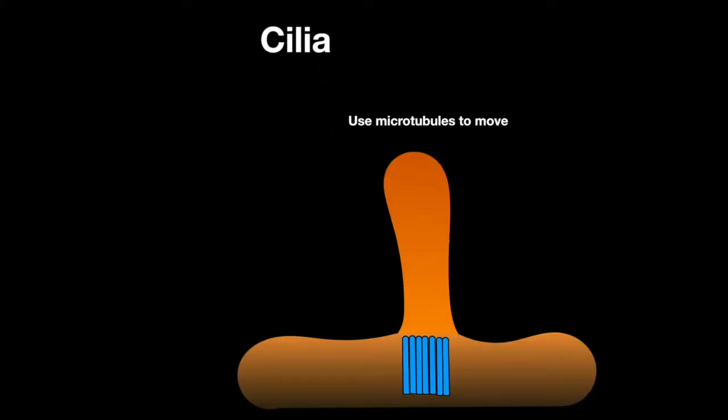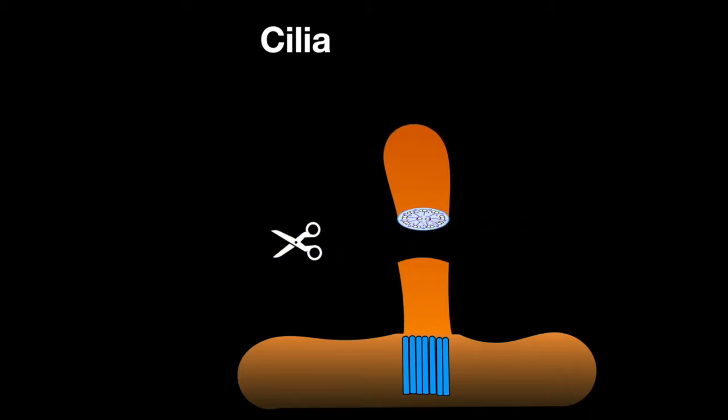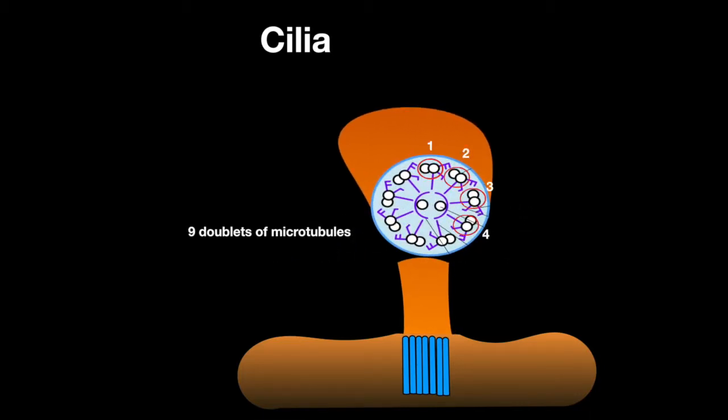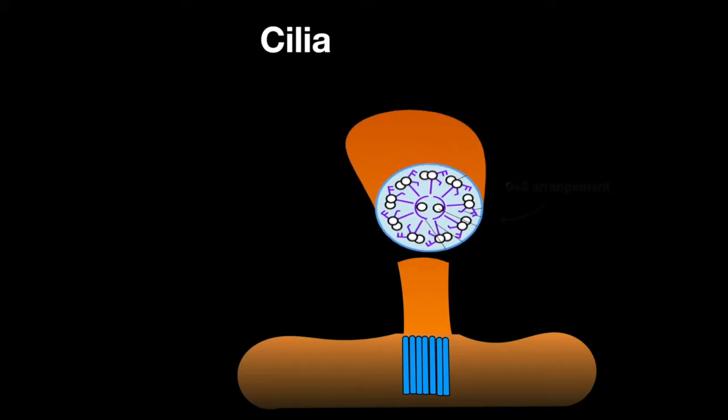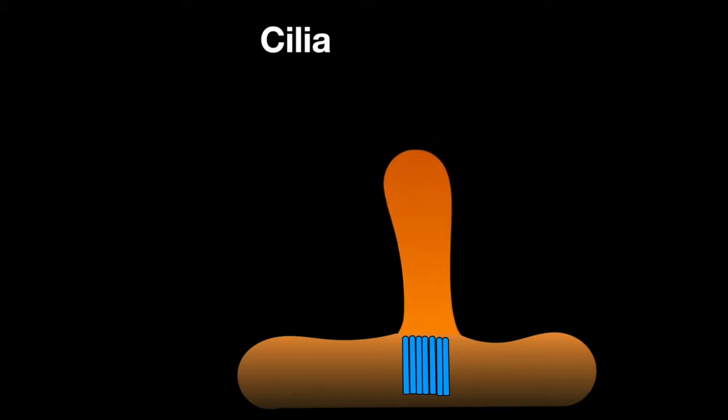Cilia uses microtubules to move. A cross-section shows that there are nine doublets on the perimeter and two singlets in the center. The region below the cilia, called the basal body, contains nine microtubule triplets.